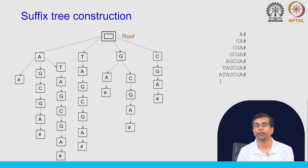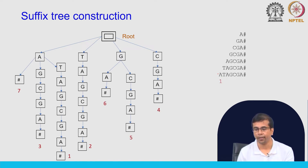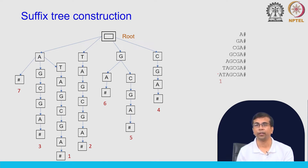We can continue this process and generate the full suffix tree. We can also add the positions denoting where the suffix starts in the string. If position 1 is the start, we add these positions at the leaves, saying this suffix starts at this position. These positions actually help us find the location when searching for reads in the reference sequence using the suffix tree.